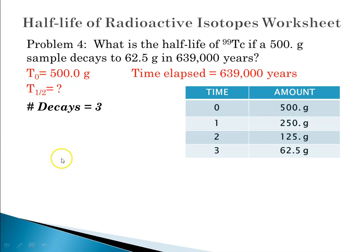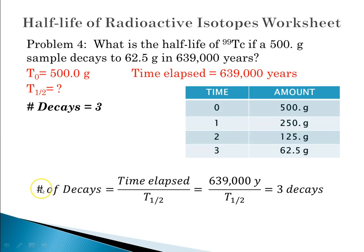So the number of decays is three. That means we can plug this information into our equation, remembering that the number of decays equals time elapsed divided by the time it takes for one decay, one half-life. So that means that 639,000 years divided by whatever half-life time is would be three decays. Put another way, 639,000 years represents three decays. So 639,000 divided by three is going to be our half-life time, and that comes out to 213,000 years.